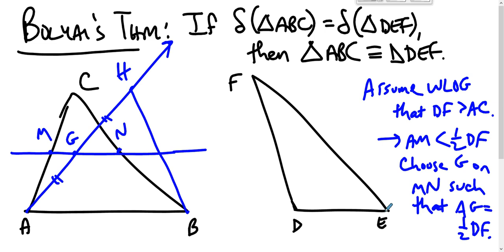transitivity, triangle ABC is scissors congruent to triangle DEF. So Bolyai's theorem cinches for us the connection between defect and area in hyperbolic geometry: two figures with the same defect are scissors congruent. So a couple of big results to talk about with respect to that, and those are coming right up.